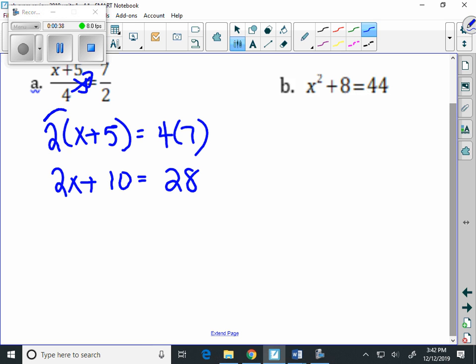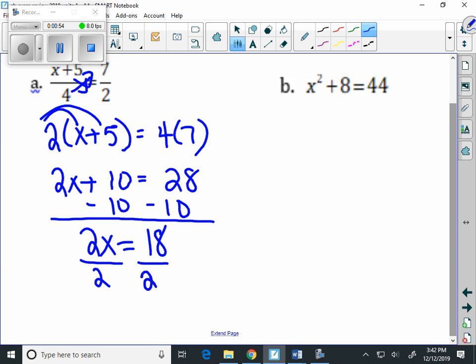By the way, that was 2 times X, and 2 times 5. Subtract 10 from both sides, and we end up with 2X equals 18. And finally, we can divide both sides by 2, and X equals 9.